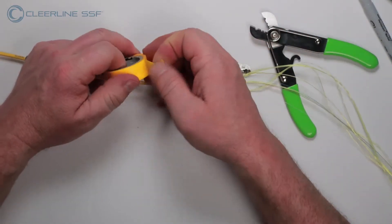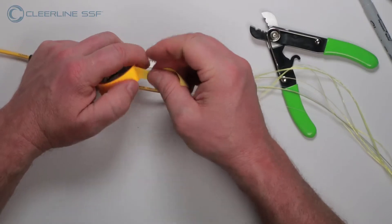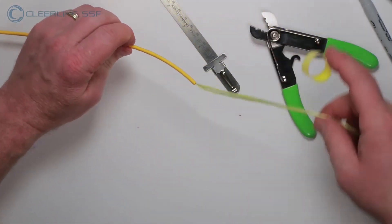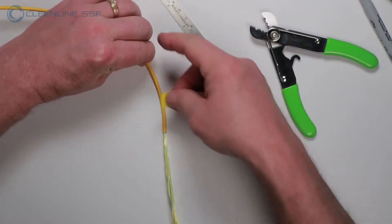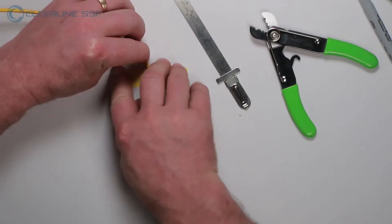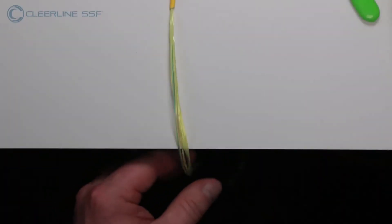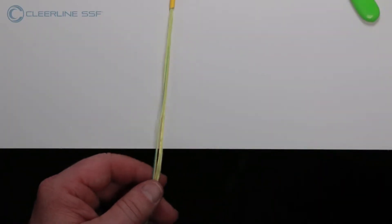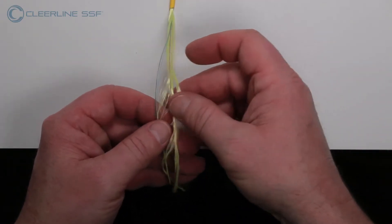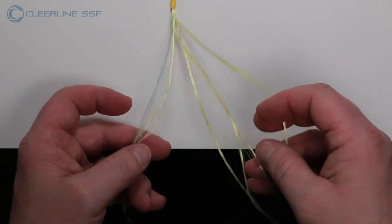Working on a flat surface with an edge, tape down the cable. Separate aramid yarns from fiber and cut yarns approximately 6 inches or 15 centimeters from the end of the jacket.